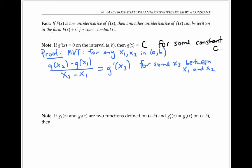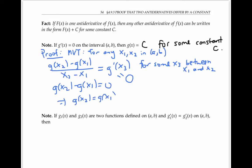But by assumption, g' is zero everywhere on the interval, so g'(x₃) must be equal to zero. This means that our numerator g(x₂) minus g(x₁) has to equal zero. In other words, g(x₂) is equal to g(x₁). But that's true for any x₁ and x₂, so all the values of g are equal, and g must be a constant.